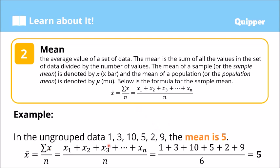Let's have an example. In the ungrouped data 1, 3, 10, 5, 2, and 9, the mean is 5. Using the formula x̄ equals summation of x over n, we have 1 plus 3 plus 10 plus 5 plus 2 plus 9, divided by 6. The answer is 5. Therefore, the average value, which is the mean, is 5.